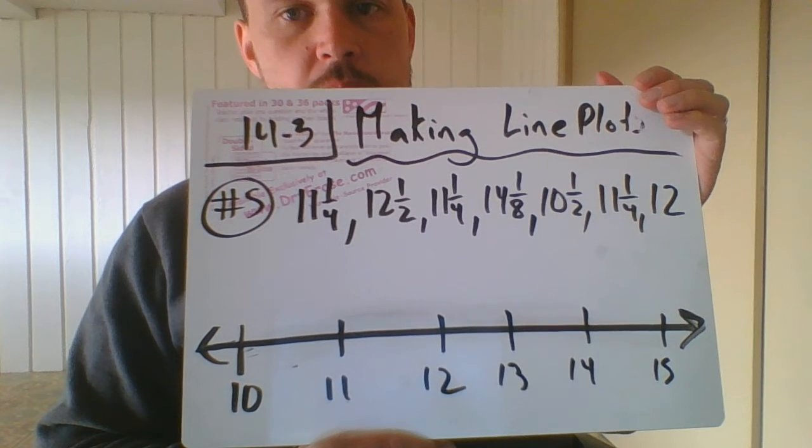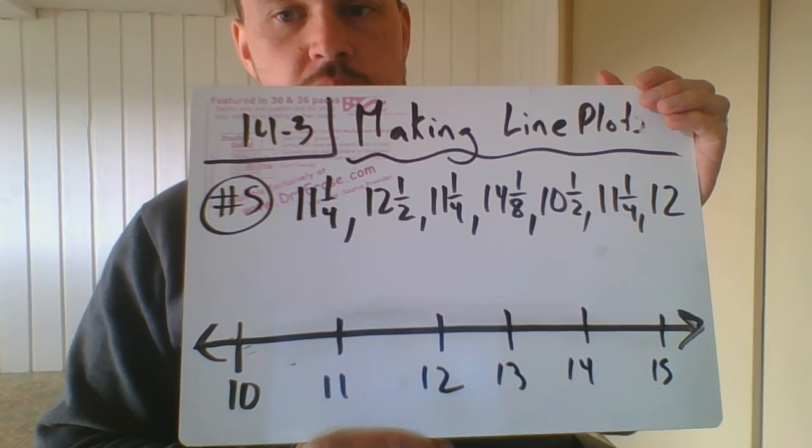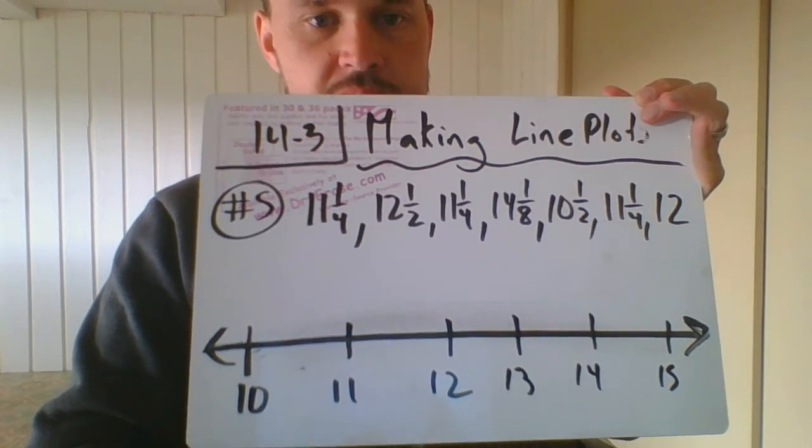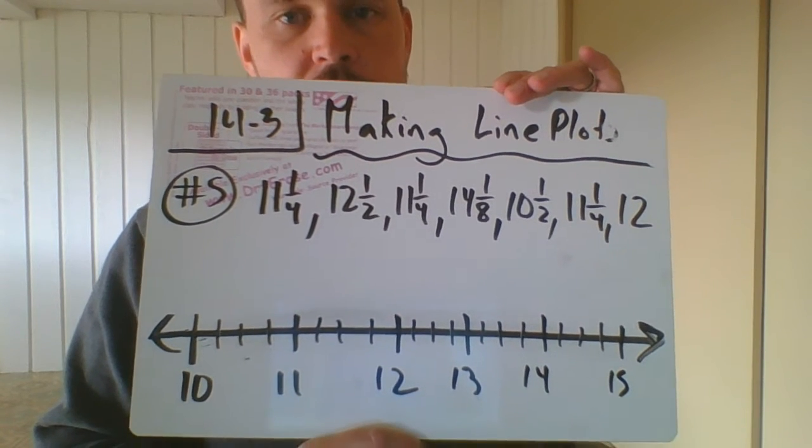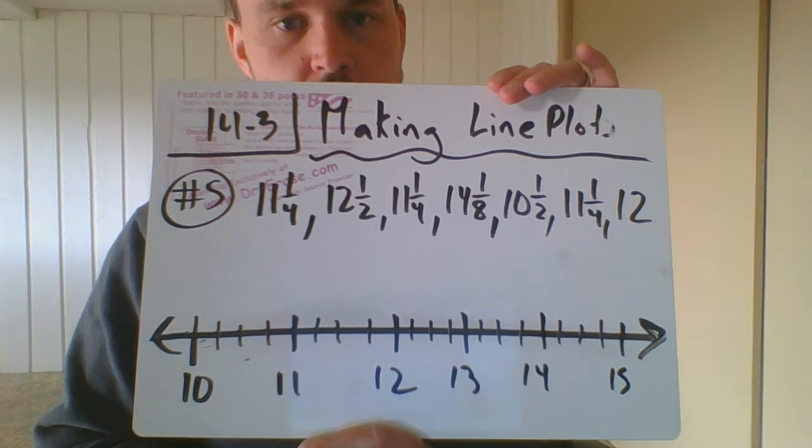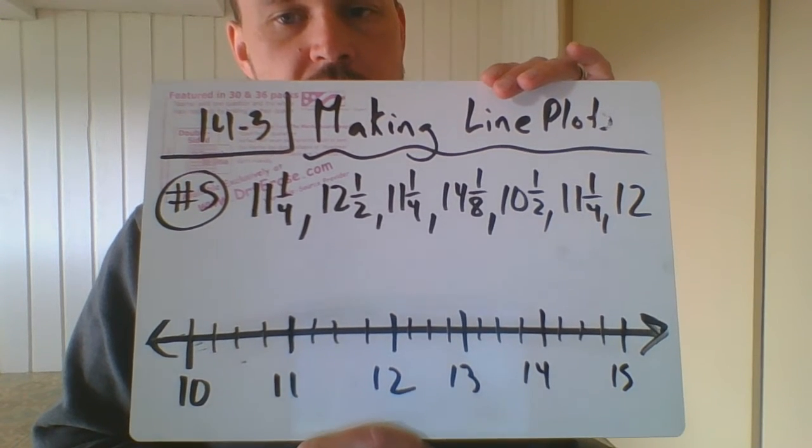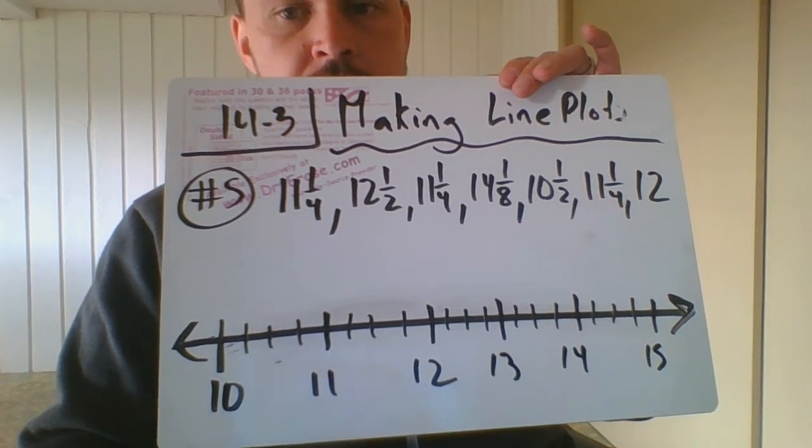So you figure out the smallest whole number, which is 10, and the largest whole number, which is 14 and an eighth. So I went to 15. Now what I did is I marked fourths between all of those. Now I know one of those is an eighth, but we'll just put that between where it goes. So now I have all of my markings from 10 to 15 with fourths marked on the number line.